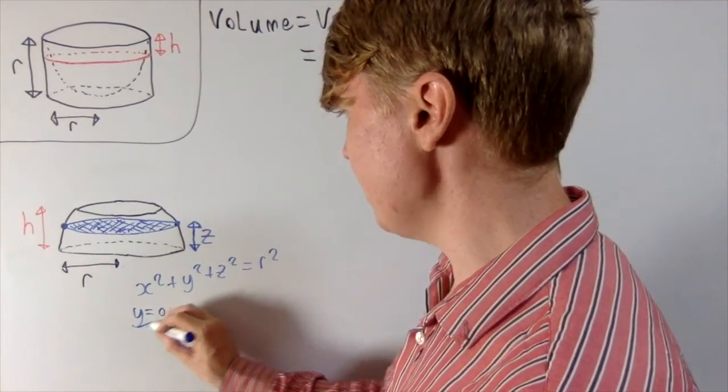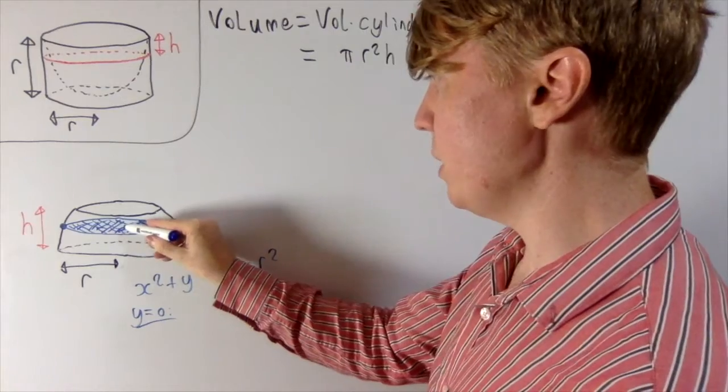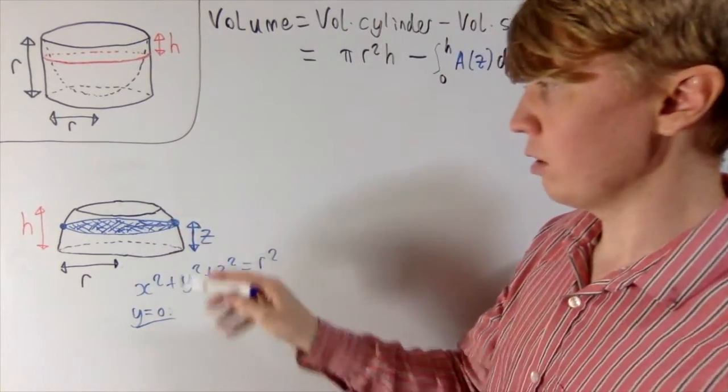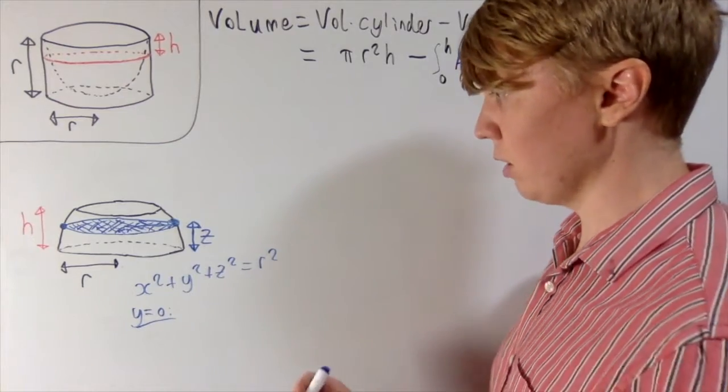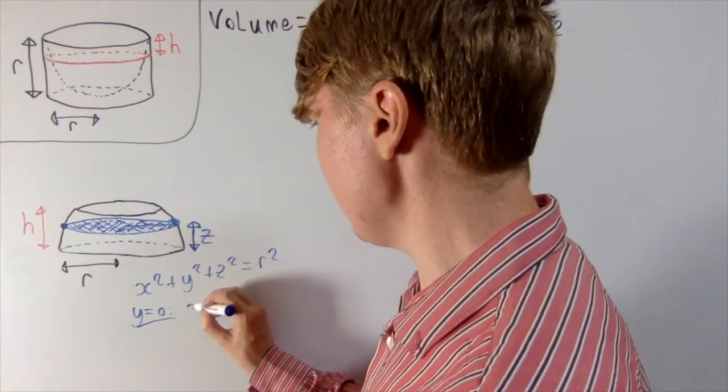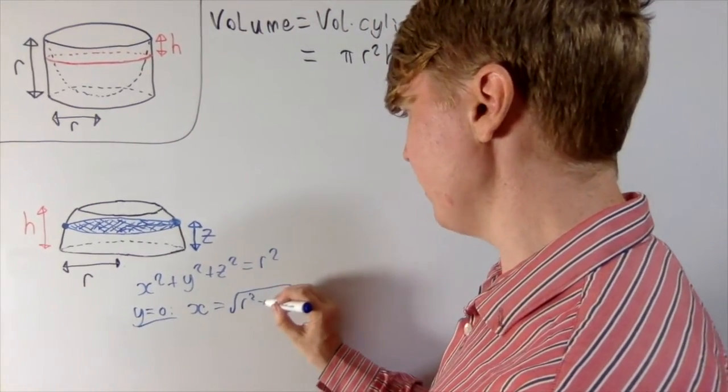So when Y is zero, at this point here, your X coordinate is going to be the radius along here, and then you can do pi R squared to find the cross-sectional area. So we can rearrange here to find X, when Y is zero, you get X equals the square root of R squared minus Z squared.